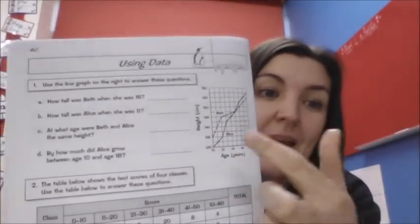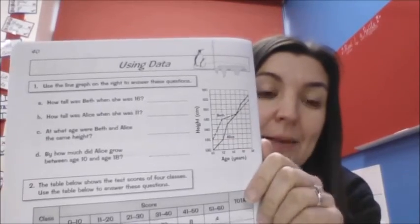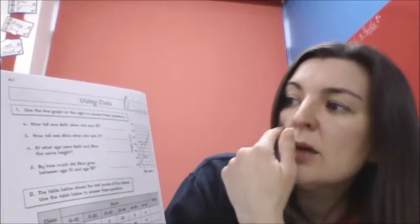You've had a little bit of practice at it and then you're going to have another go at it today. Similar thing but this time you've got the age of two girls Alice and Beth and their height, what height they were at different ages in their lives, and then it asks you some questions.